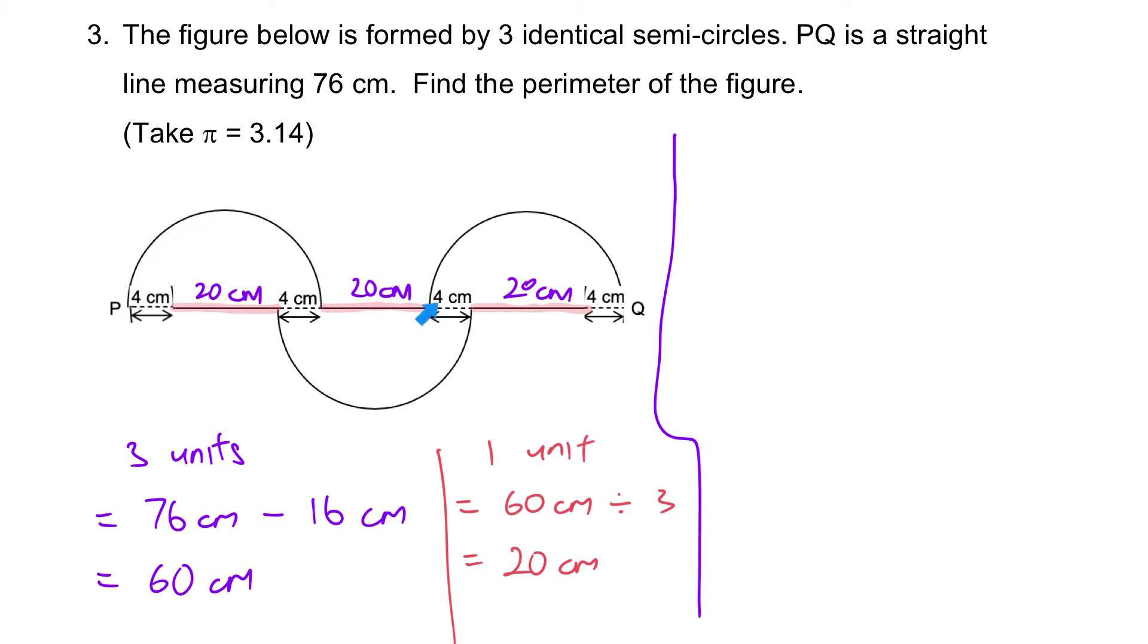So the perimeter of the figure - let me write it down - perimeter of the figure. This is actually, you add this with this with this, you will get one and a half circle circumference, isn't it? So one and a half circle is three out of two.